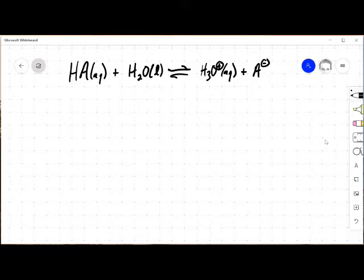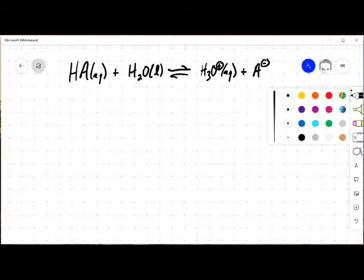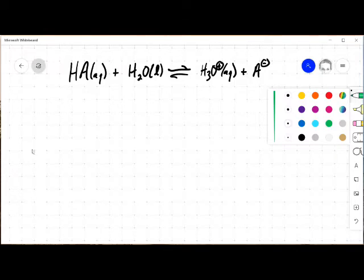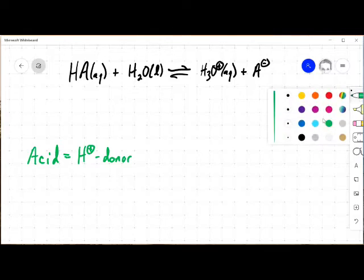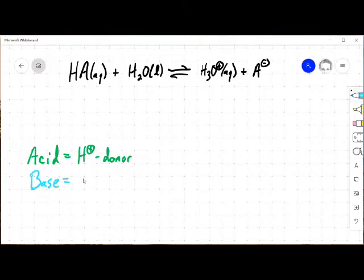There are a lot of things we can point out here. One idea that's very important for us to think about is the idea of conjugates. So if we think about this, let's use a Bronsted-Lowry type definition of acids and bases. An acid is an H plus donor. A base is an H plus acceptor.